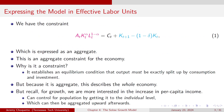We have the aggregate resource constraint from last time: A·K^α·L^(1-α) = C + K_{t+1} - (1-δ)·K_t. This is an aggregate constraint for the economy. It's a constraint because it establishes an equilibrium condition that output has to be exactly split up between consumption and investment. Because it's aggregate, it describes the whole economy. For growth, we're more interested in per capita income, not aggregate income, and we can control for population by getting it down to the individual level.